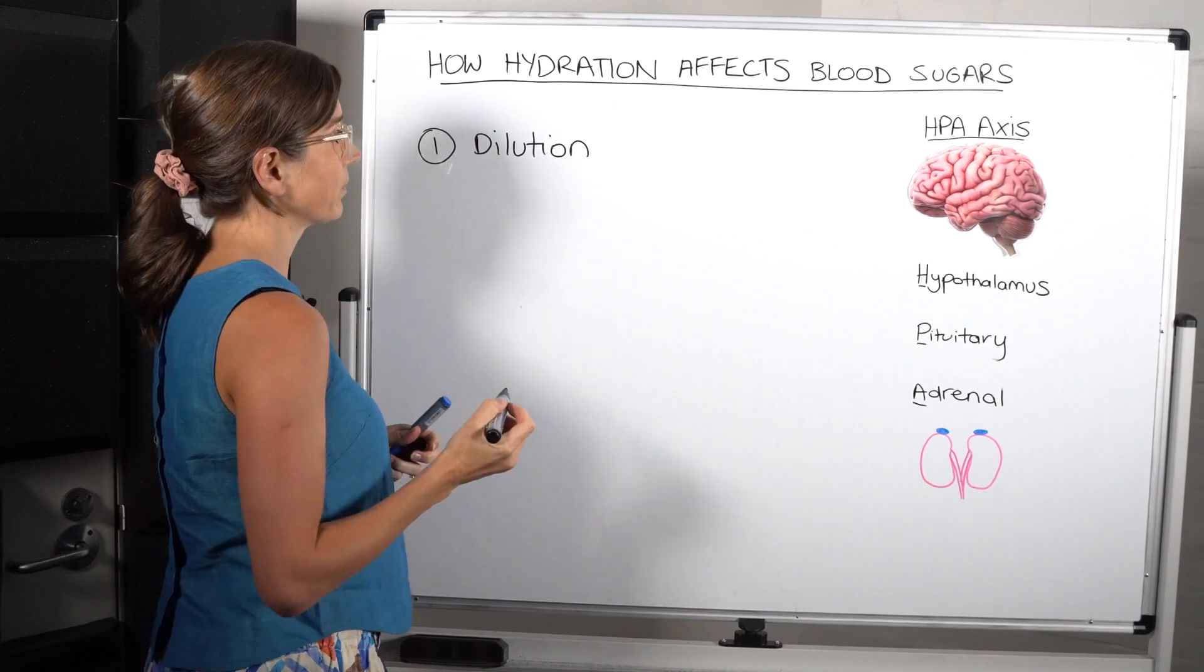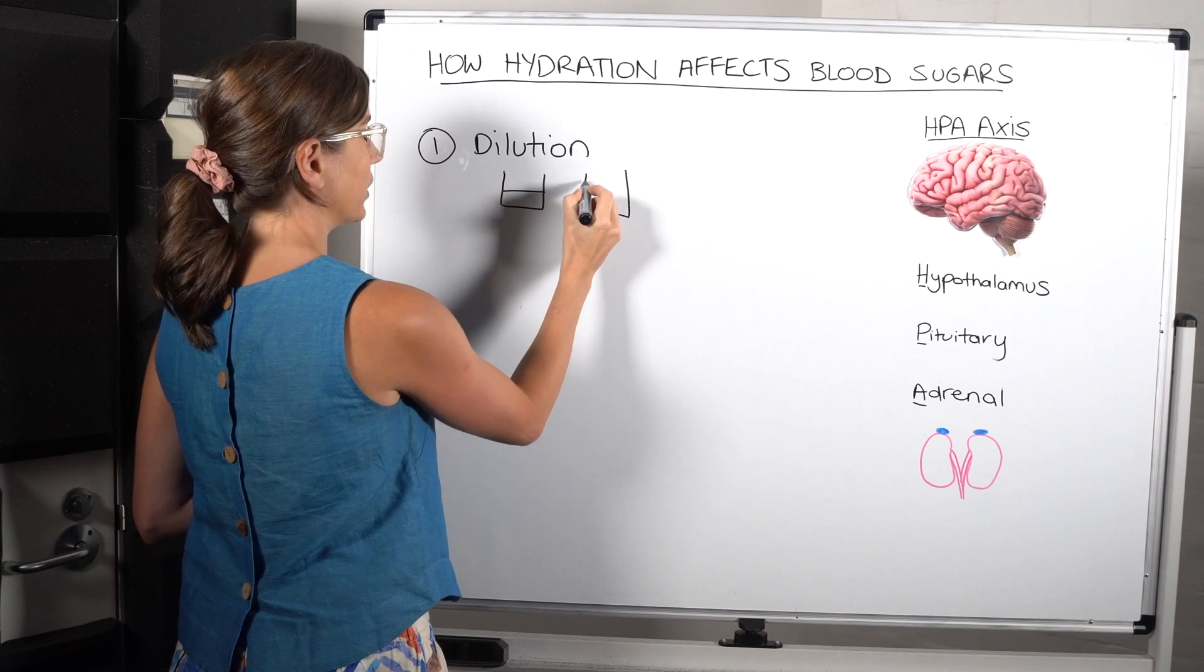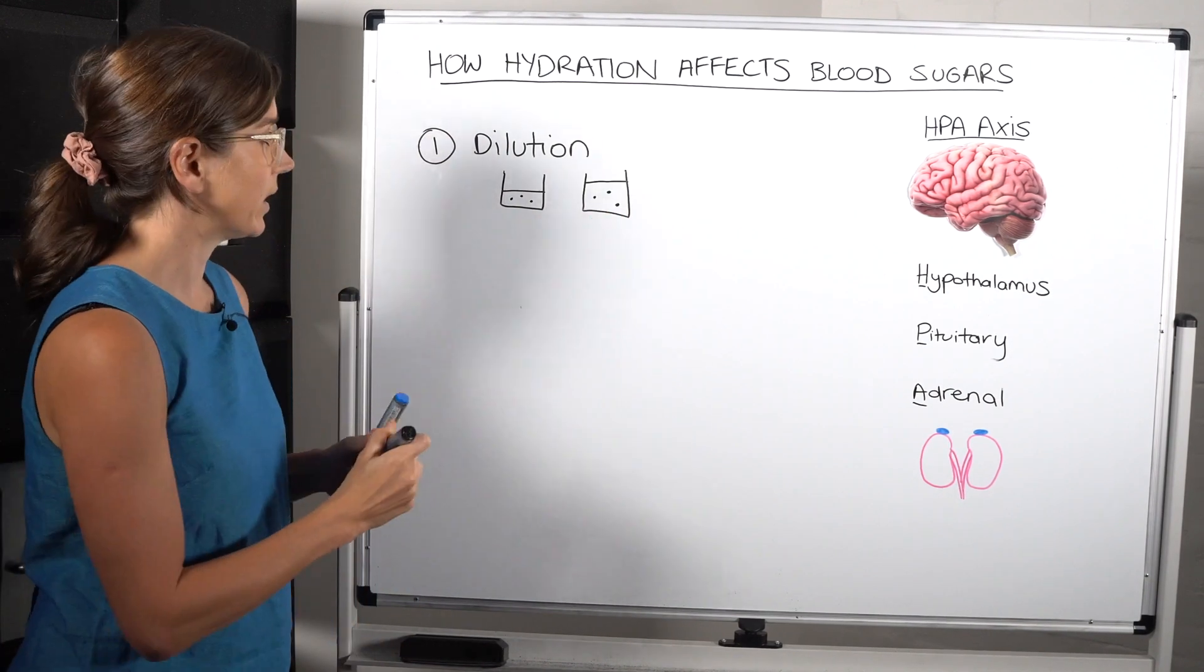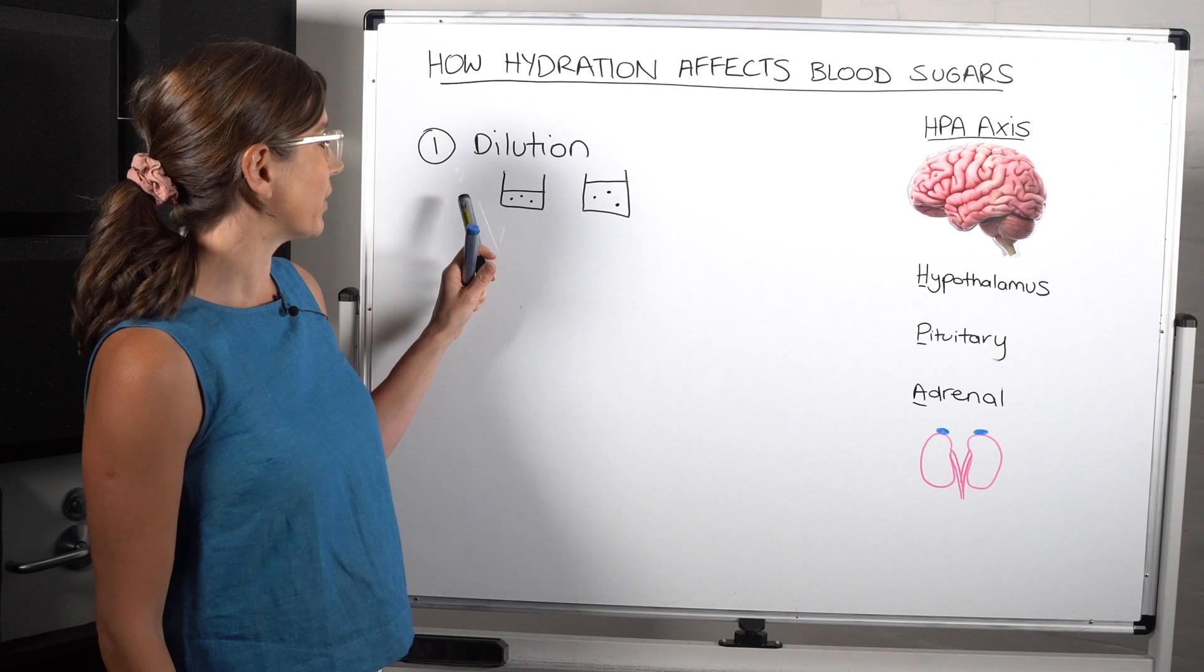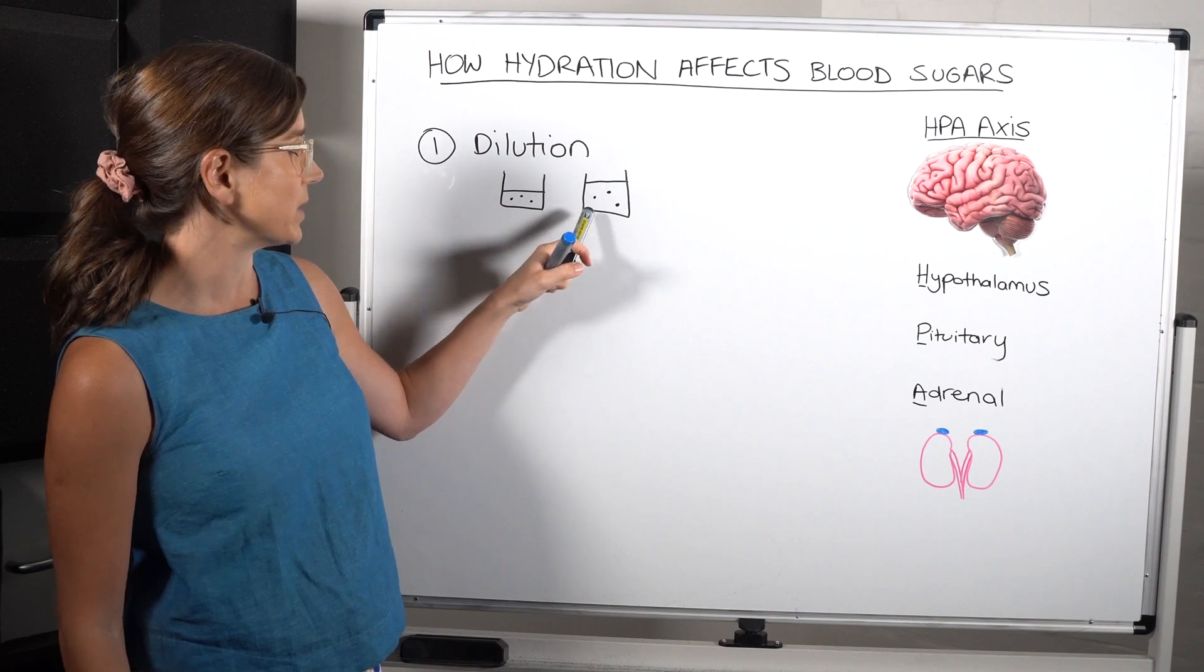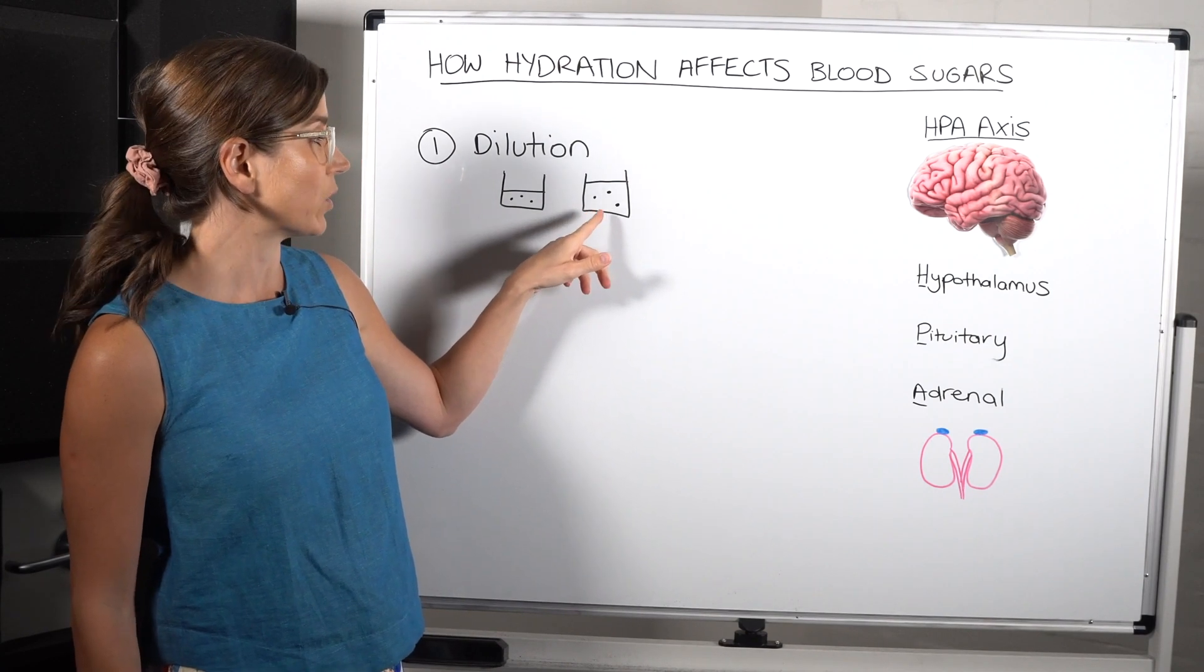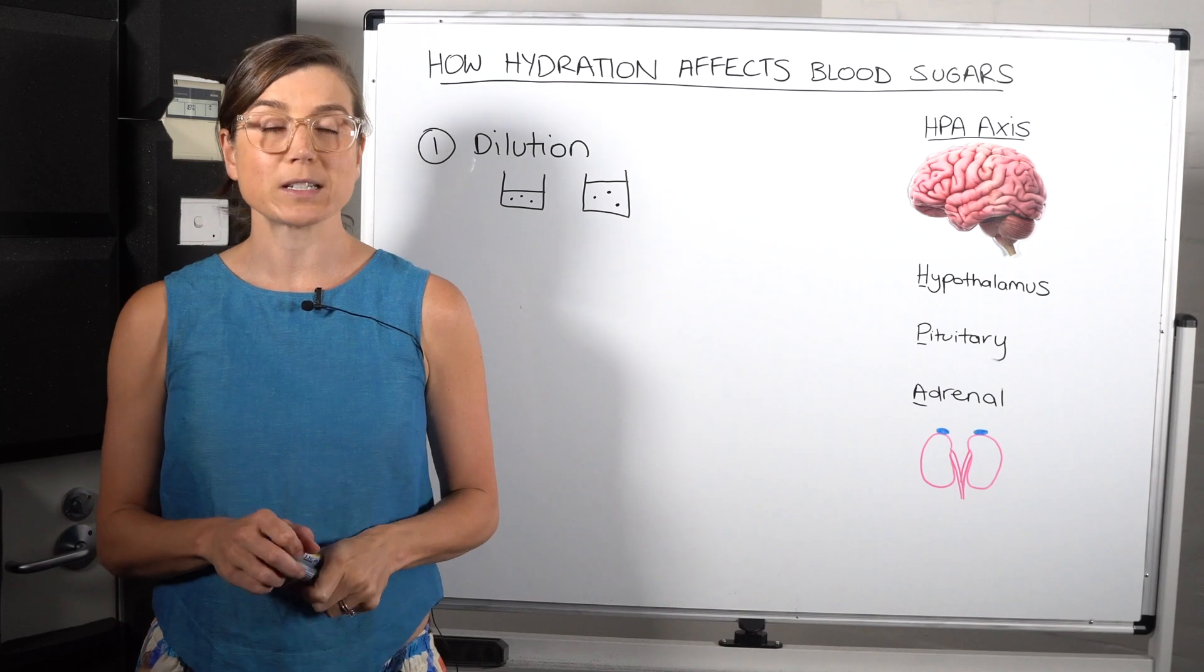So the first thing that can or how hydration affects your blood sugars is the simple act of dilution. So if you think about dilution, if you have two beakers here or two glasses and one has less volume or less liquid in it and the other one has a greater volume or a greater amount of liquid in it but the same number of glucose molecules. So there are three glucose molecules in this first container and then there are three glucose molecules in the second container. So the concentration of this first one with less volume is going to be greater, whereas in the second container the concentration will be less because there is greater volume. And so this is exactly what happens in your blood to a certain degree.